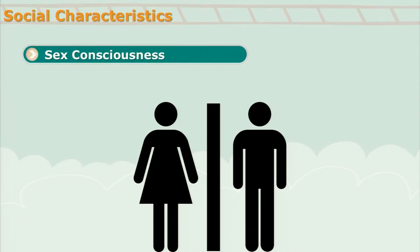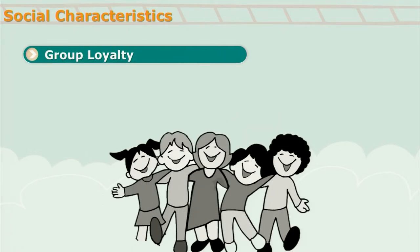At this stage, adolescents become Sex Conscious. It means that they become aware — 'I am a boy, you are a girl' — and they become conscious of their own sex as well as of others. At the childhood stage, they mingled with each other without being bothered about these things. But at this stage, they become conscious and all their actions are guided by group loyalty.